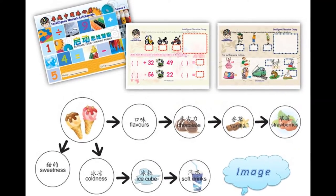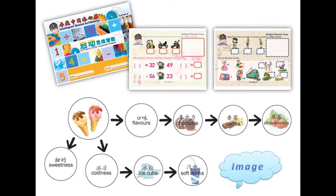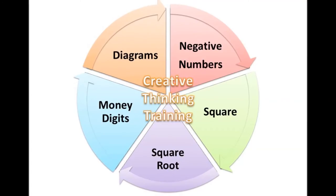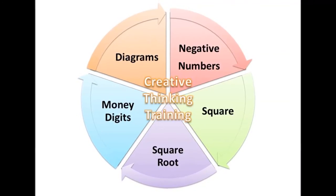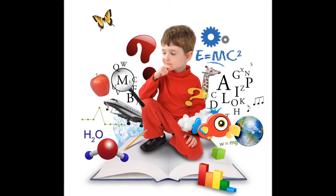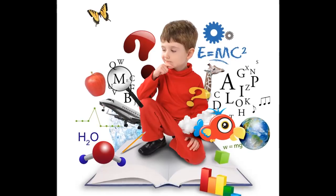Creative thinking training is conducted with analysis and reasoning of problems through images. With the diagrams, the training of negative numbers, square root, and money digits, children are able to move away from inert thinking and linear thinking mode, and instead start thinking in the right mode for greater intelligence.